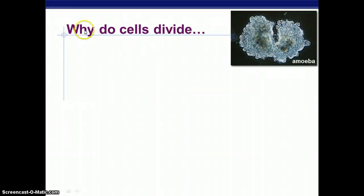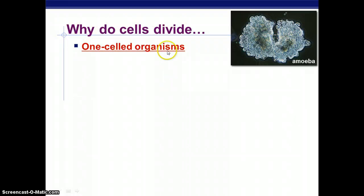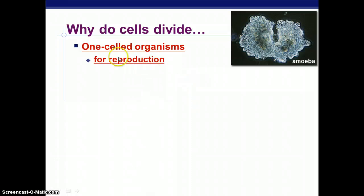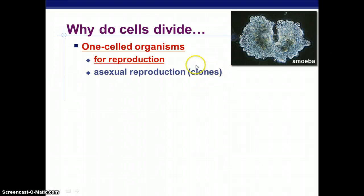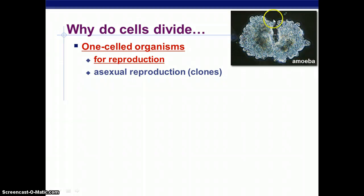But why do cells actually divide? Single-celled organisms, like an amoeba, actually divide for reproduction. However, this may not be sexual reproduction — it is asexual reproduction, or the making of clones. So we have an amoeba here, which is a single-celled organism. It started as one cell and is now dividing and making two new identical cells.